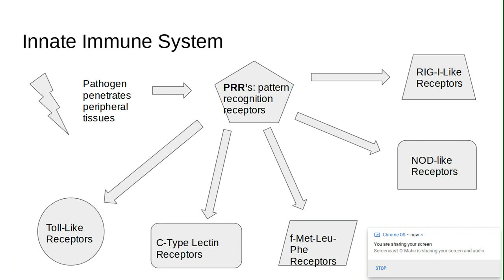Toll-like receptors facilitate the activation of the adaptive immune system by producing pro-inflammatory cytokines. Looking at the C-type lectin receptors, those are involved in fungal recognition and modulate the innate immune response by binding to carbohydrates. Those are membrane-bound receptors.